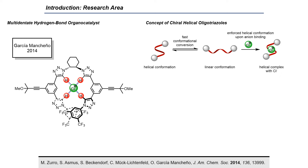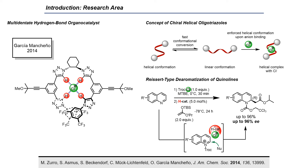We applied this concept in the de-aromatization of quinolines. In this Ritter-type reaction, the acyl chloride pre-activates the quinoline by forming the quinolinium, and the released chloride anion is captured by the catalyst, creating the close contact ion pair.